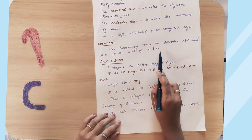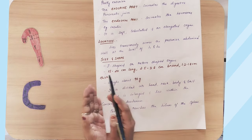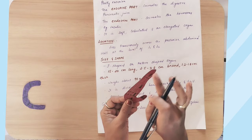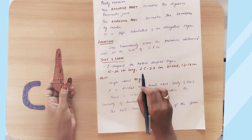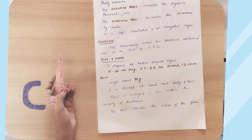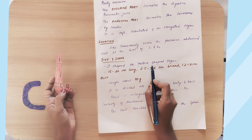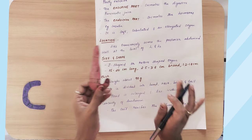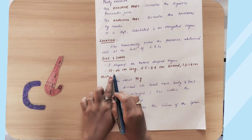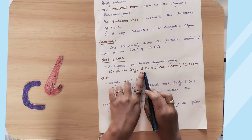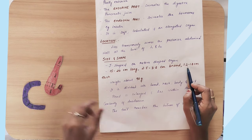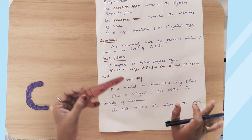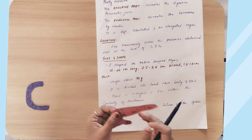Coming to size and shape, the pancreas is J-shaped — also described as retort-shaped, as used in the lab. It is 15 to 20 cm long, 2.5 to 3.8 cm broad, and 1.22 to 1.8 cm in thickness. Its weight is approximately 90 grams.